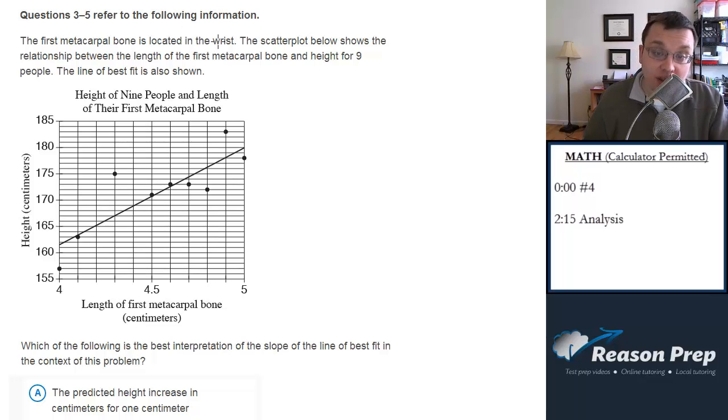The first metacarpal bone is located in the wrist. The scatter plot below shows the relationship between the length of the first metacarpal bone and the height for nine people. The line of best fit is also shown. Which of the following is the best interpretation of the slope of the line of best fit in the context of this problem?